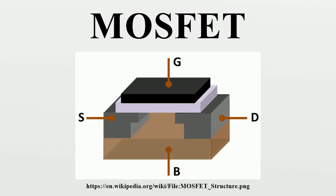An insulated gate field effect transistor or IGFET is a related term almost synonymous with MOSFET. The term may be more inclusive, since many MOSFETs use a gate that is not metal and a gate insulator that is not oxide. Another synonym is MISFET for metal insulator semiconductor FET. The basic principle of the field effect transistor was first patented by Julius Edgar Lilienfeld in 1925.